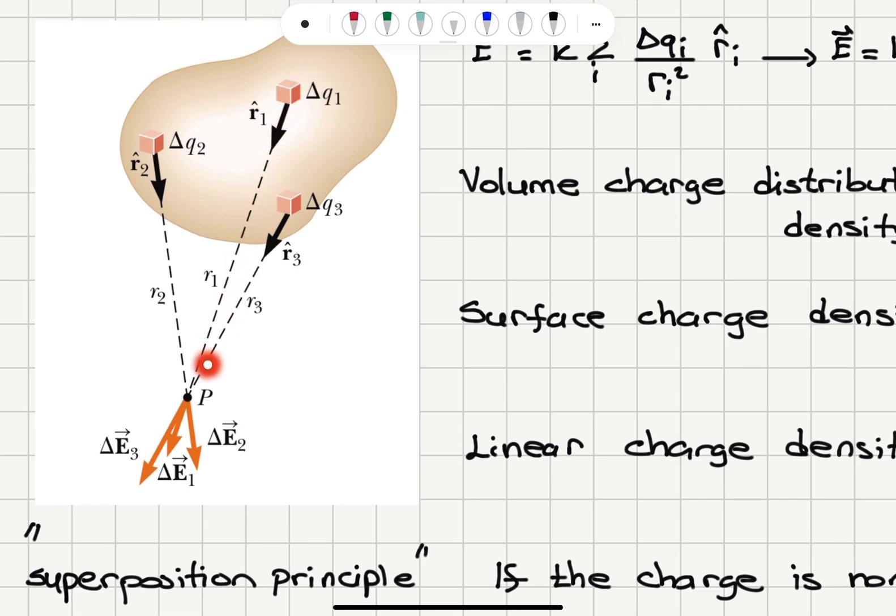And if we place a test charge at point P, we see that the electric field due to delta Q1 will be delta E1 because the delta Q1 we are assuming positive and the test charge is positive, it will be basically in the R1 hat direction.